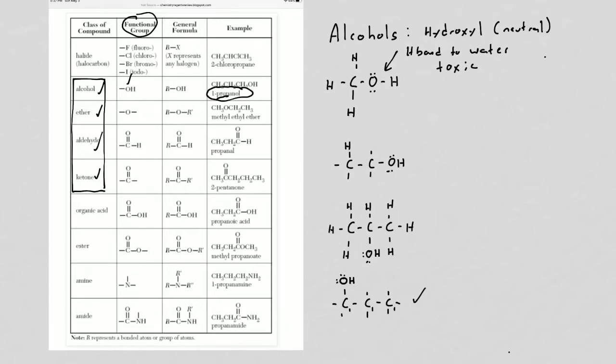An isomer of that would be this one right here. It's the exact same thing - 3 carbons, so it's a propanol. Notice the ending here, the suffix O-L. All alcohols end in O-L. They put a number in the front to tell you where the hydroxyl is located. For this one, it's located in the middle carbon, so this would be 2-propanol.